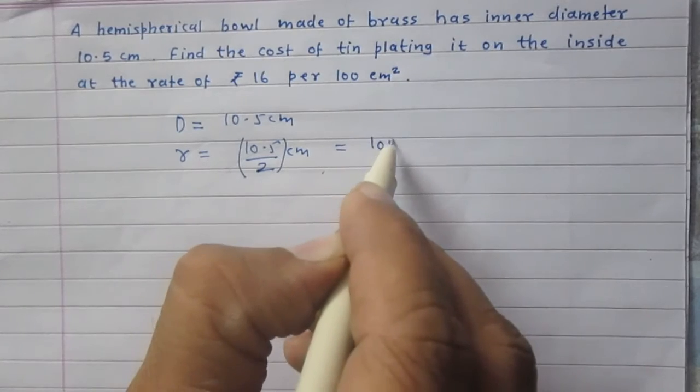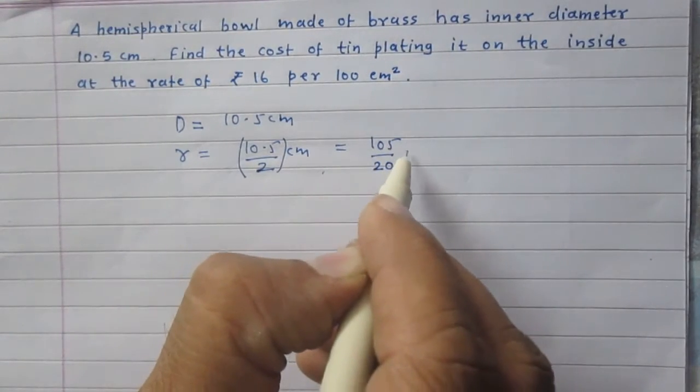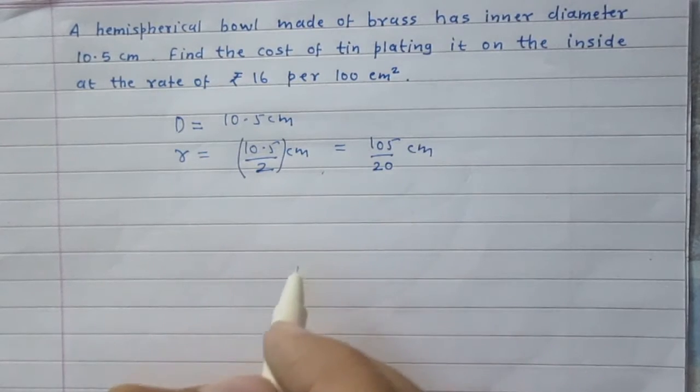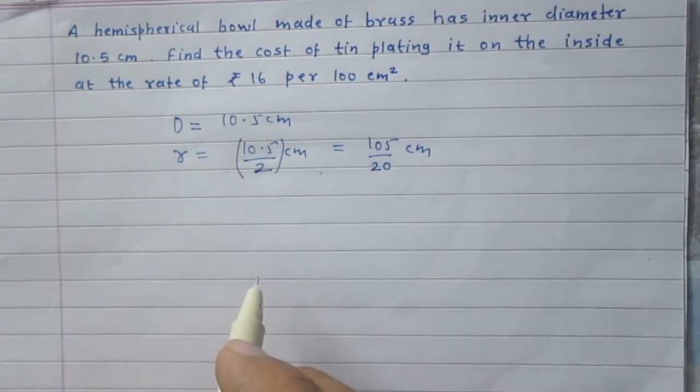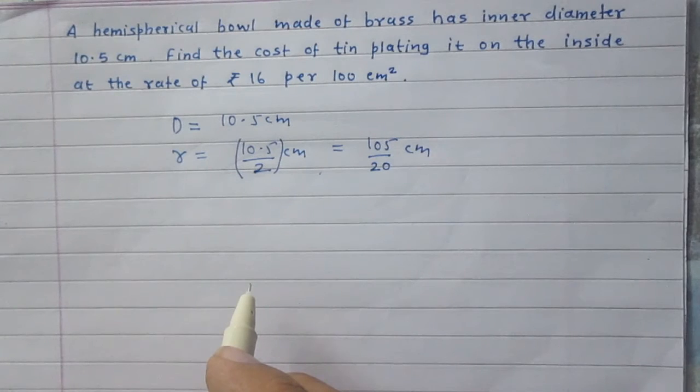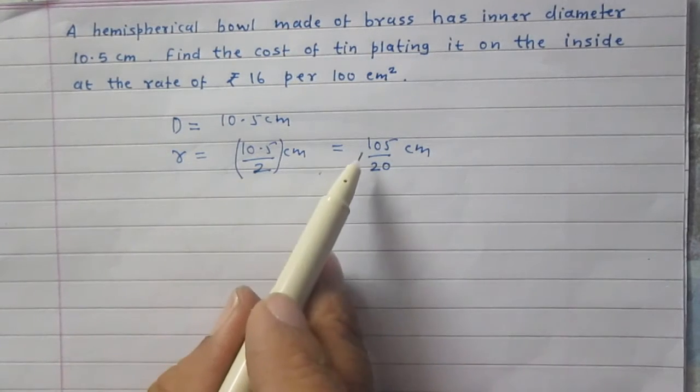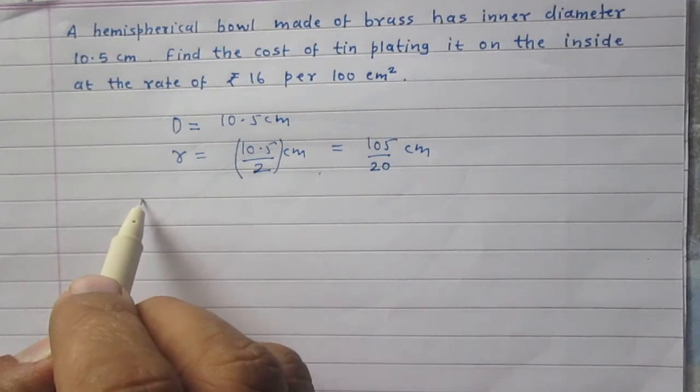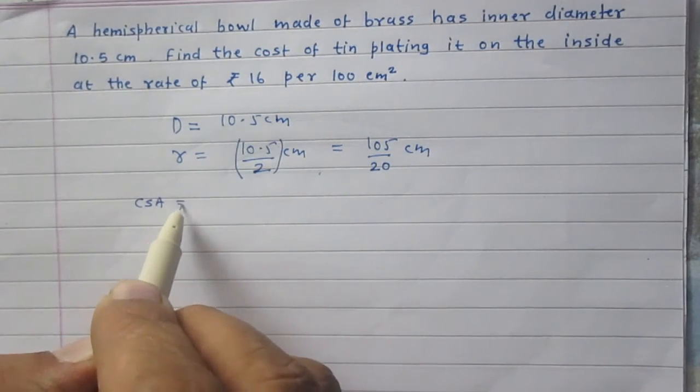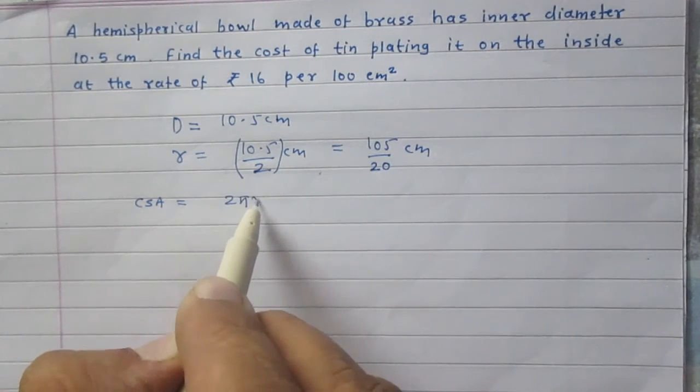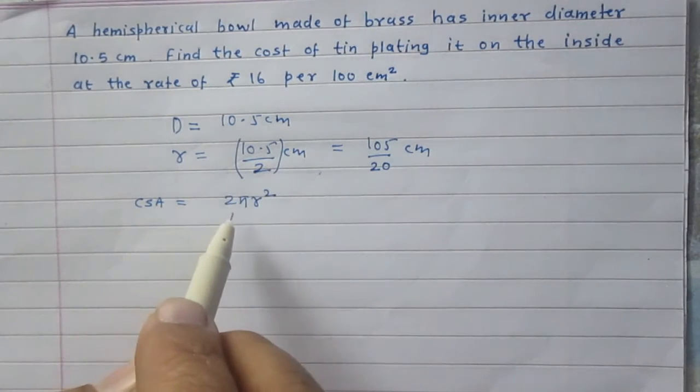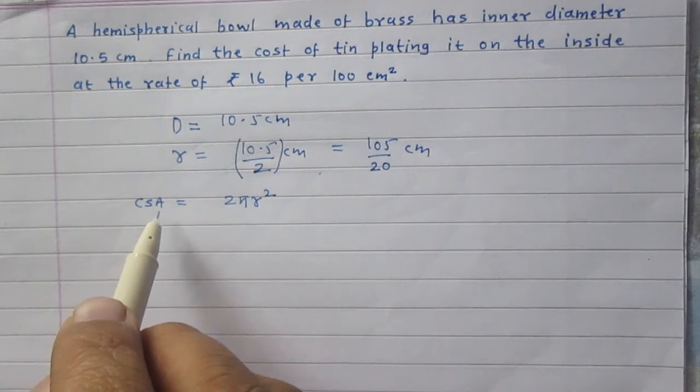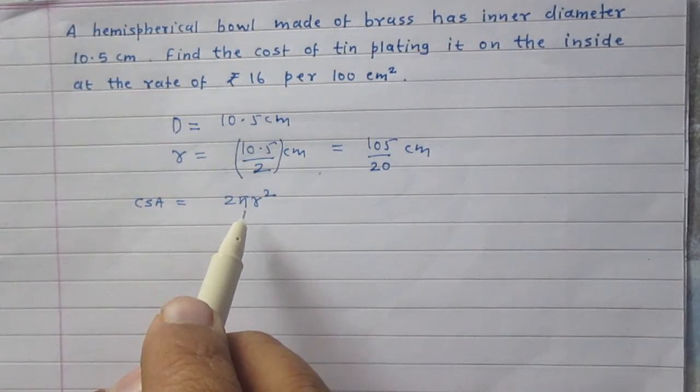Now we will have to find the inner curved surface area of the ball. Since inner radius is 105/20 centimeters, the inner curved surface area of the ball is 2πr². This is the formula of curved surface area of a hemisphere. Since the ball is in the shape of a hemisphere, its inner curved surface area is 2πr².